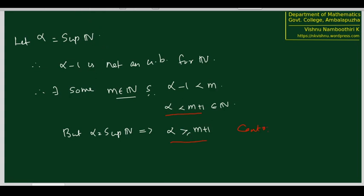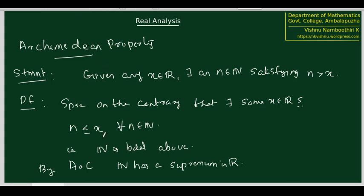So why did this contradiction happen? This contradiction happened because we assumed we found a supremum for N, but we found a supremum for N because we assumed that the set of all natural numbers is bounded above — that is, we assumed there exists an x such that x is greater than or equal to every n. So if that is not true, then whatever x we choose, there exists one n such that x is less than n, or n is greater than x. So we have completely proved the statement: given any x in R, there exists a natural number n satisfying n greater than x.